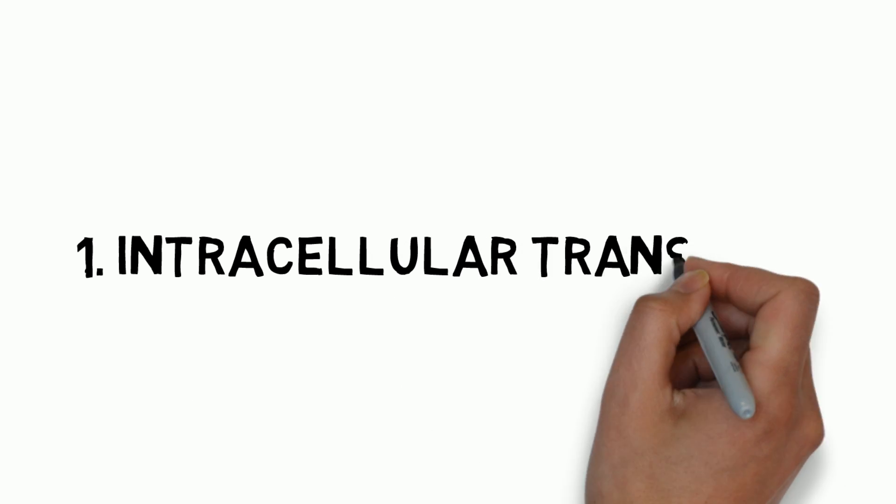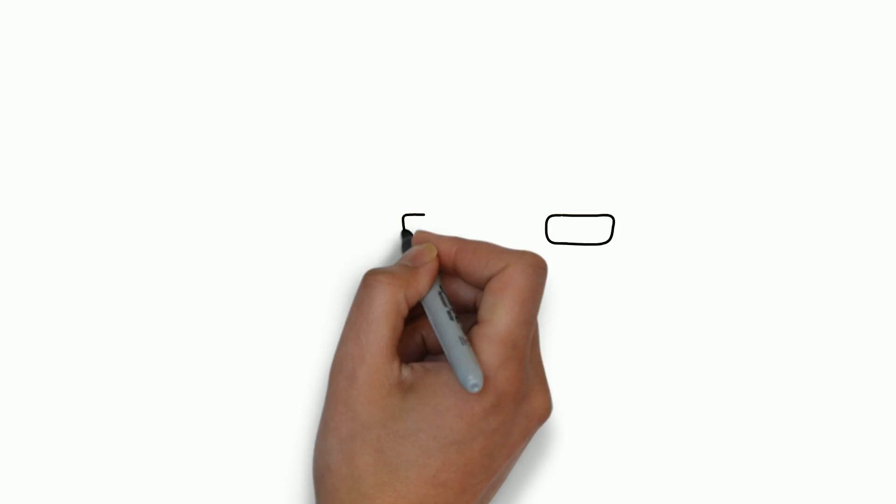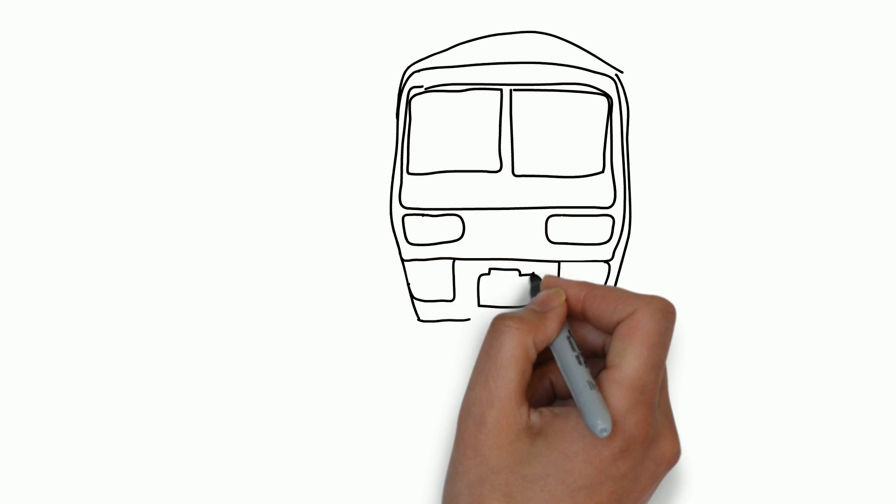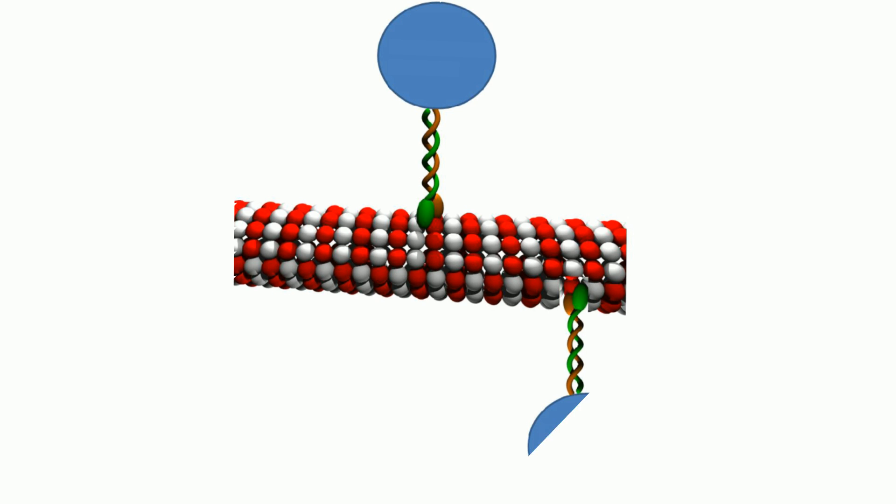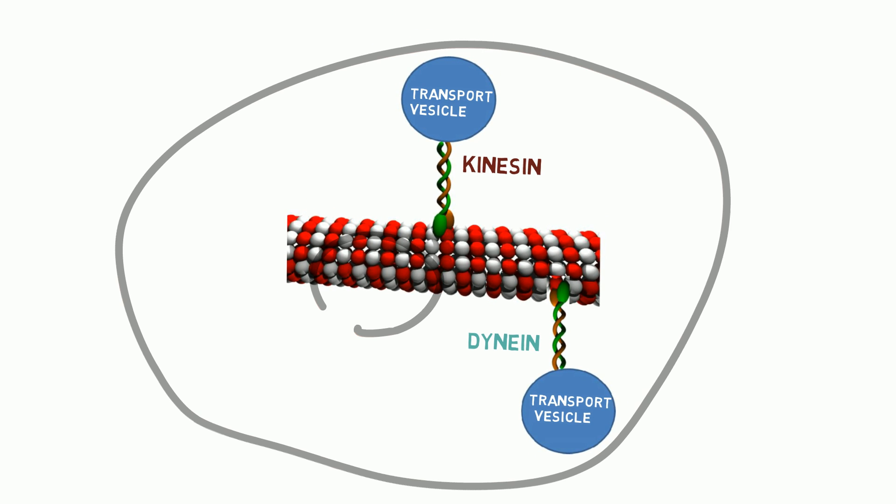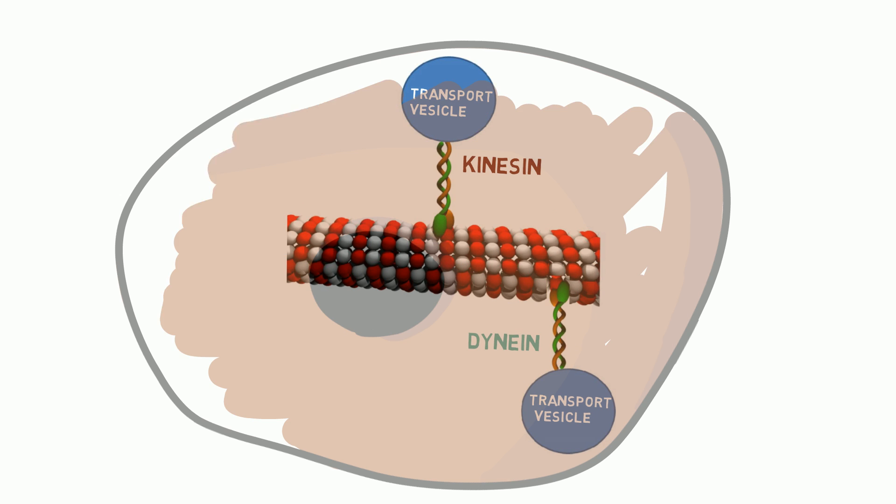The first function we will look at is intracellular transport. Just as the train runs on tracks, there are also motor proteins that run on microtubules for transportation. The motor proteins kinesin and dynein utilize the microtubule network to transport vesicles from one part of the cell to another.